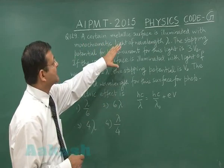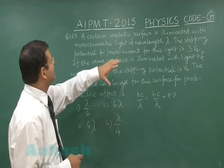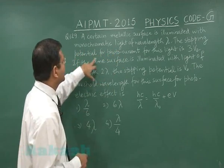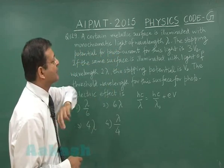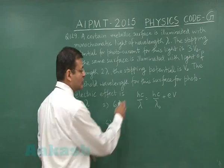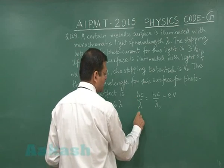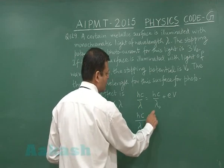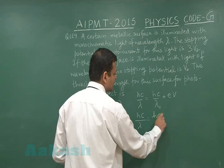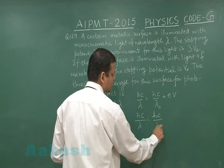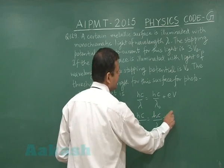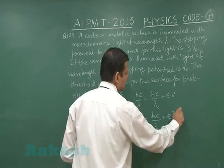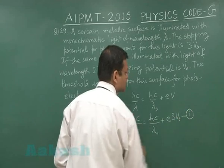A metallic surface is illuminated with monochromatic light of wavelength λ, and the stopping potential for the photo current is 3V₀. Substituting gives HC/λ equals HC/λ₀ plus e·(3V₀). This threshold wavelength λ₀ is what we need to calculate. This is equation number 1.